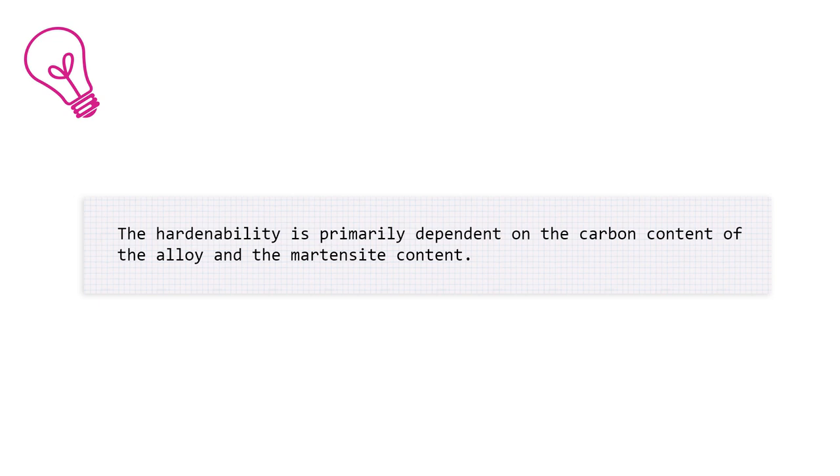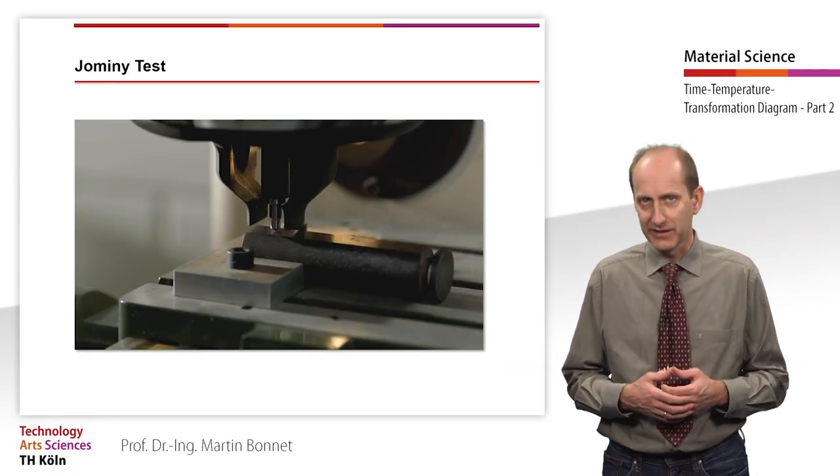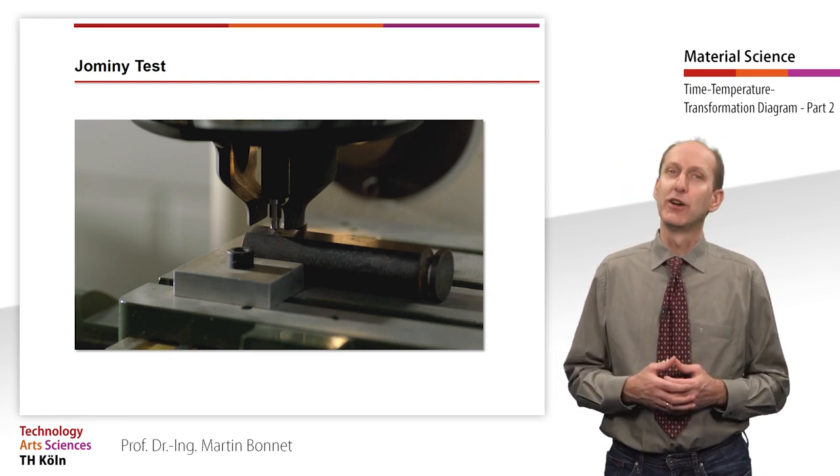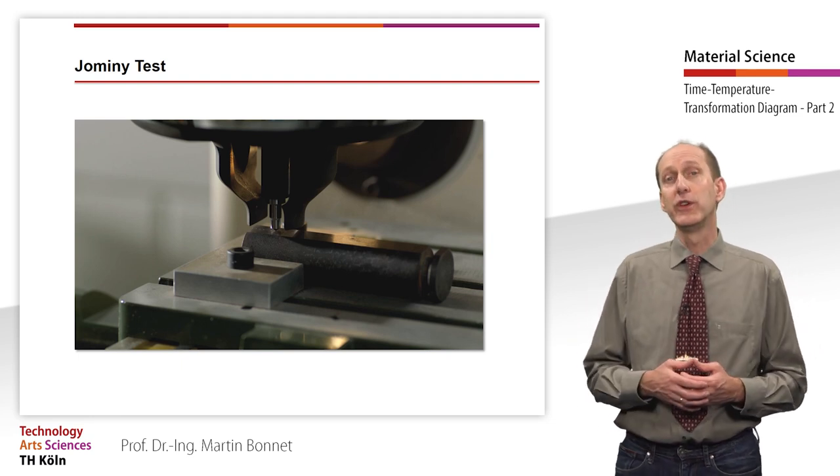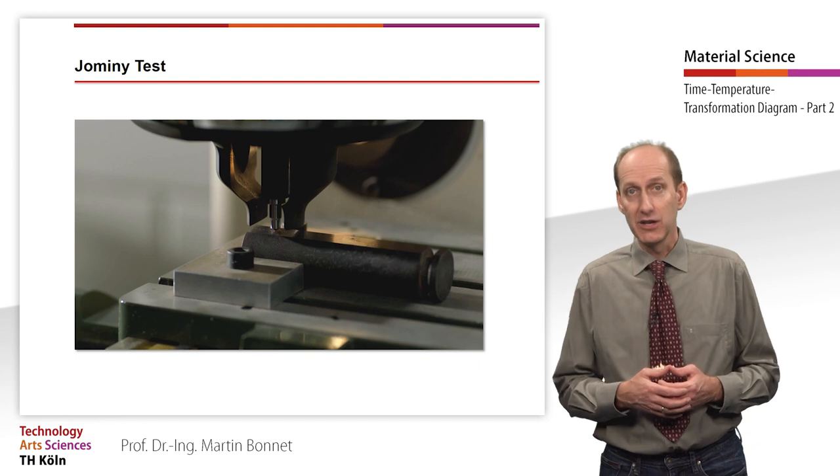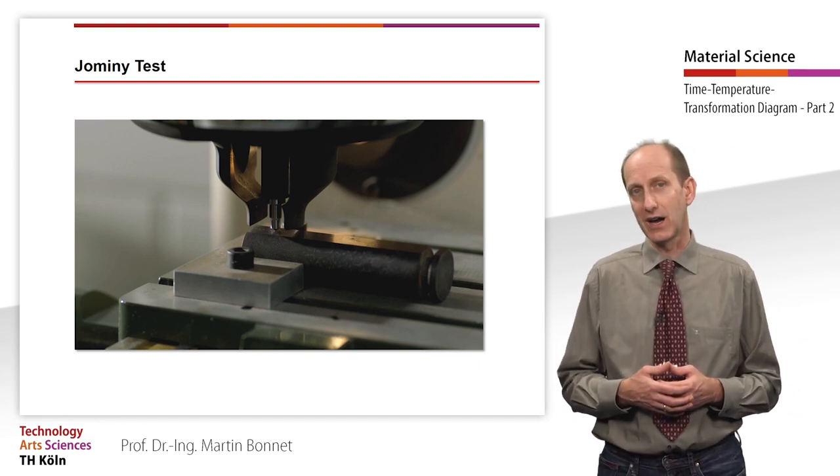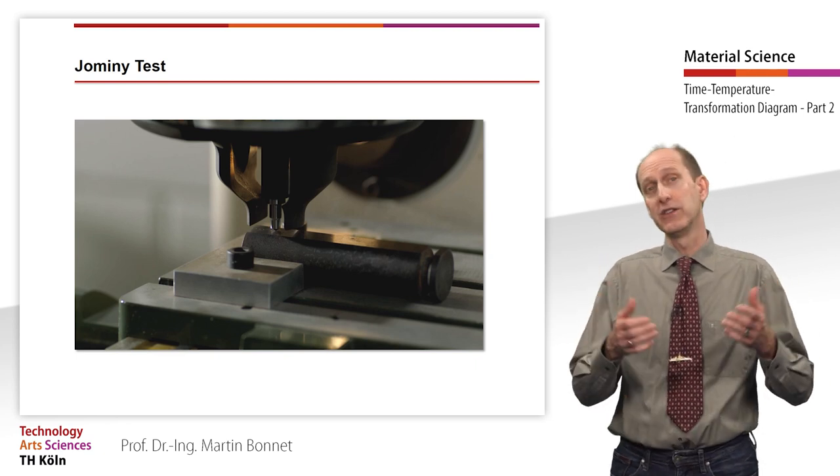The hardenability is primarily dependent on the carbon content of the alloy and the martensite content. An unalloyed steel sample containing 0.2% carbon has a hardness of 45 HRC when fully converted to martensite. An unalloyed steel sample with 0.8% carbon achieves a much higher hardness of 63 HRC. The higher the carbon content, the greater the hardenability.